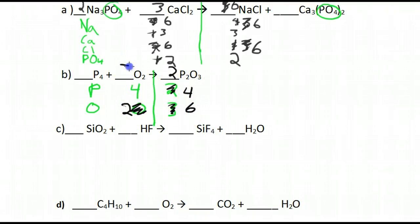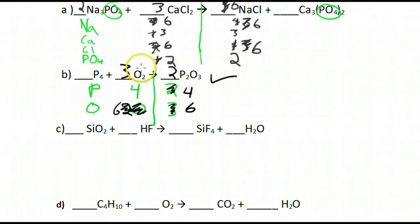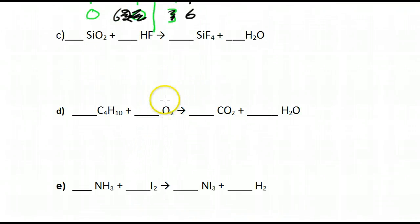Now we're balanced on the P's and just have to balance the O's. We'll put a three here and we're good to go. Double checking: four P's on this side, four on the other; six O's on this side and six O's on the other.